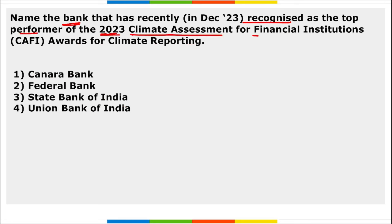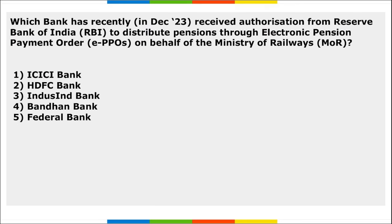Next: name the bank recently recognized as the top performer of the 2023 Climate Assessment for Financial Institutions award for climate reporting. It is Federal Bank. Federal Bank emerged as a standout performer by securing two positions on the global stage and four recognitions in the South Asian region.